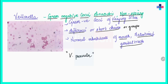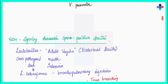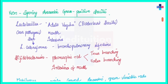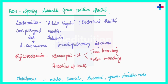Veillonella parvula has been seen in different clinical specimens, but its pathogenic role is still uncertain. Moving on to the next group: non-sporing anaerobic gram-positive bacilli. The first bacterium we will discuss in this group is Lactobacillus.